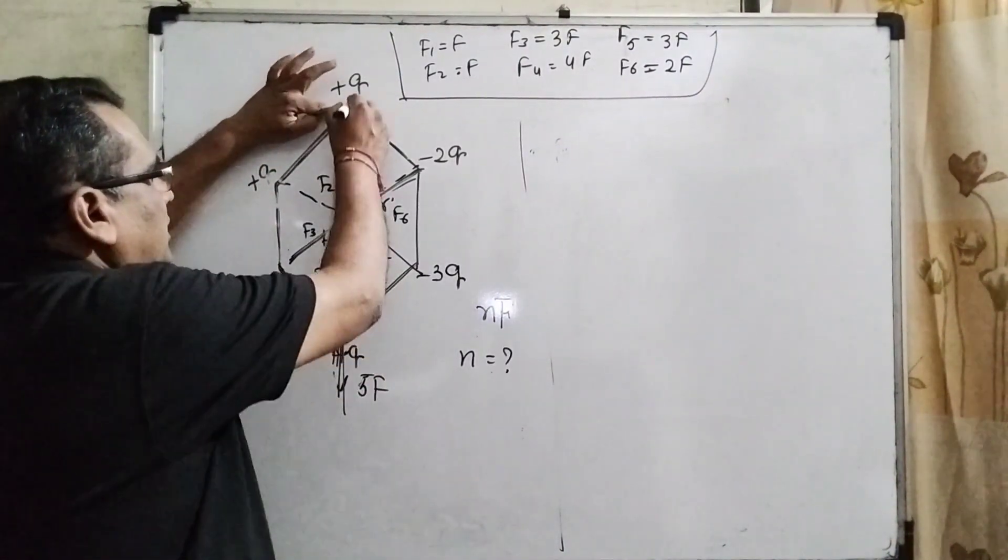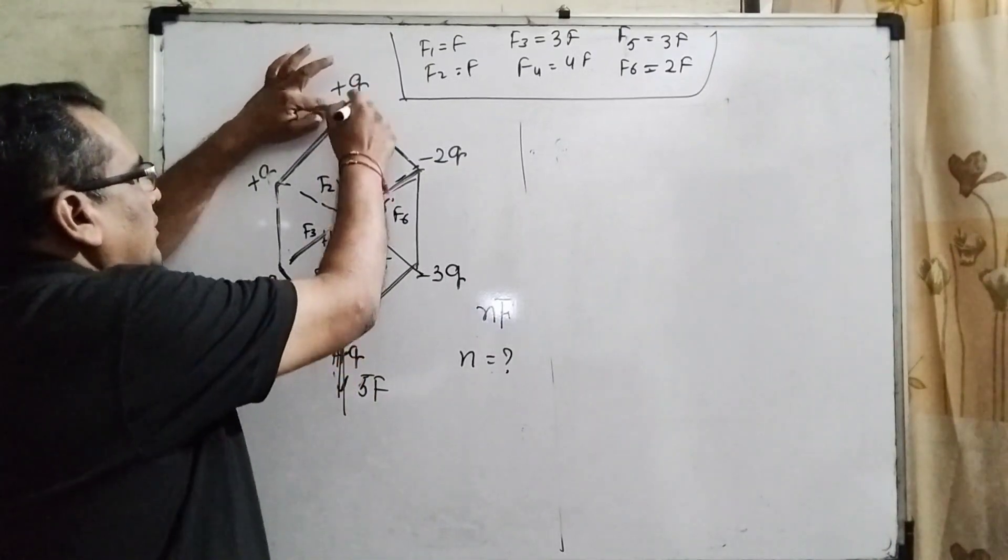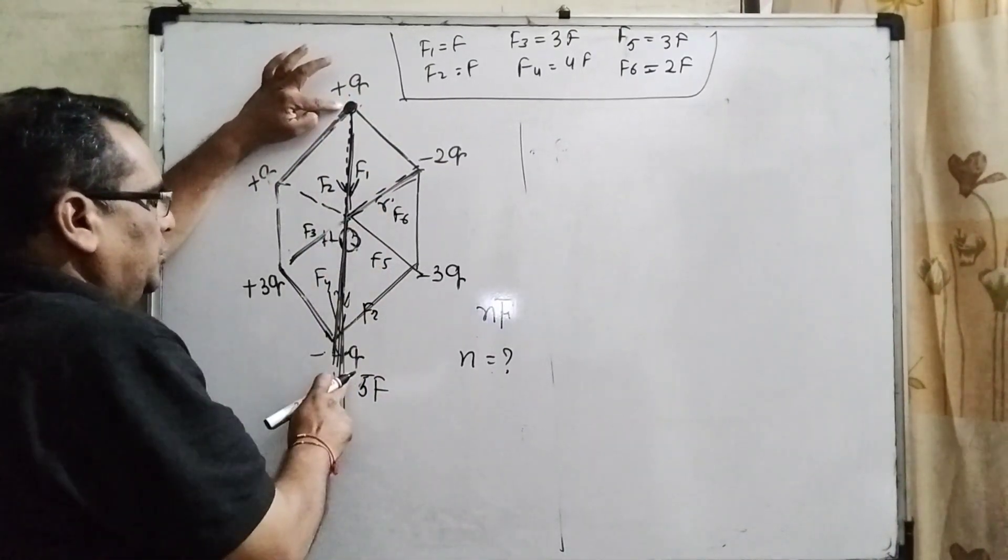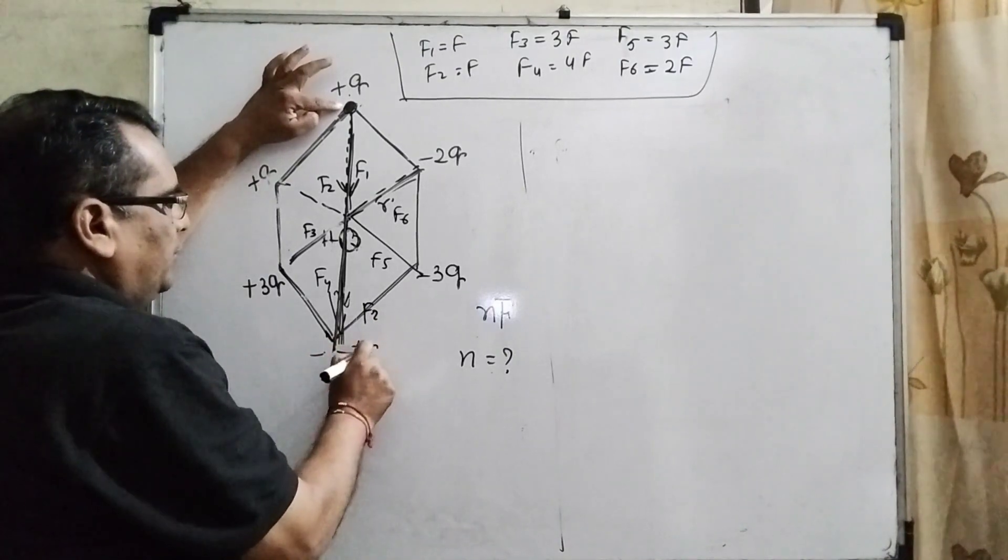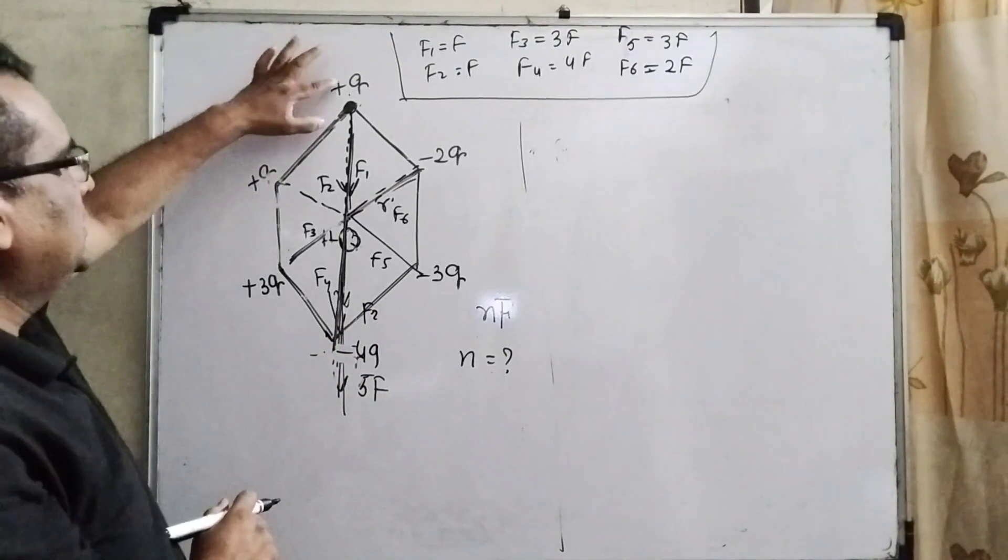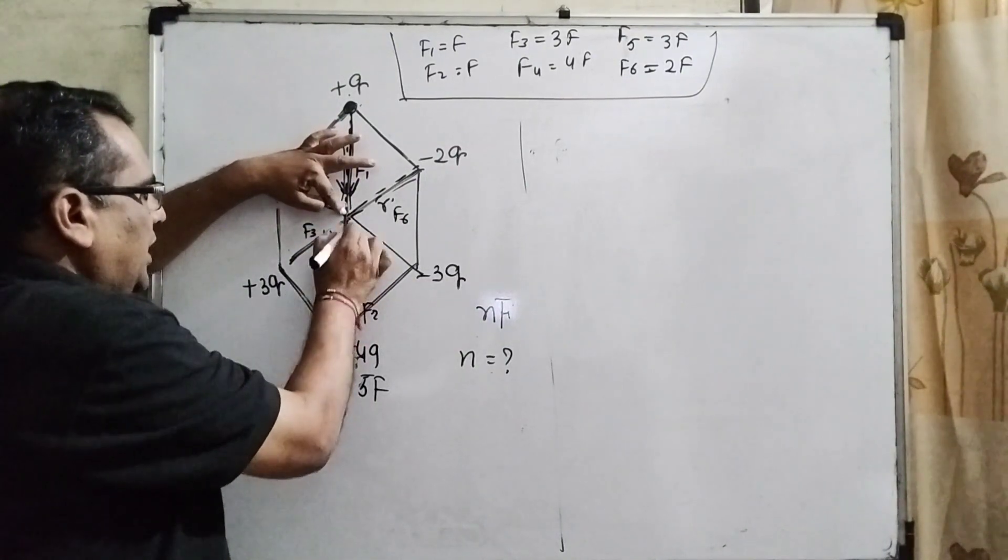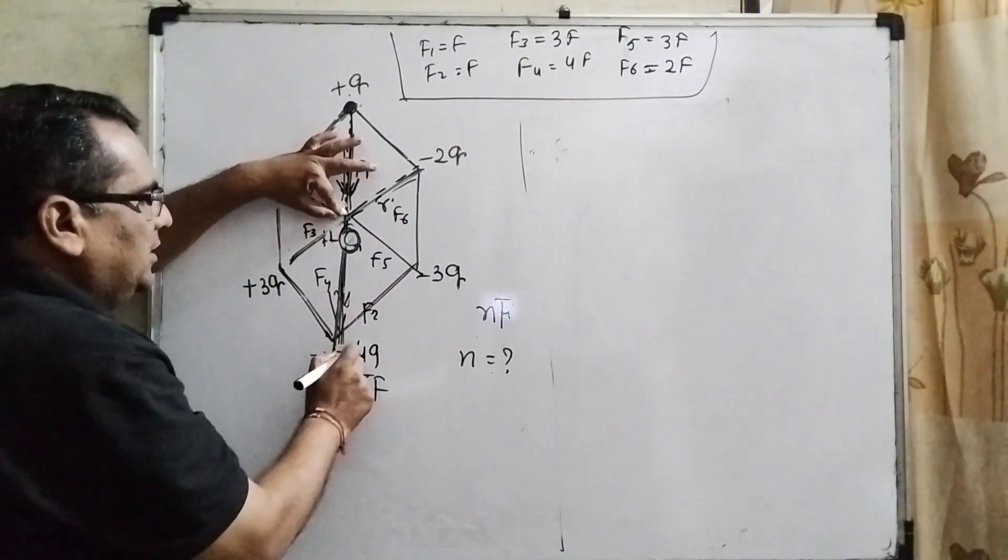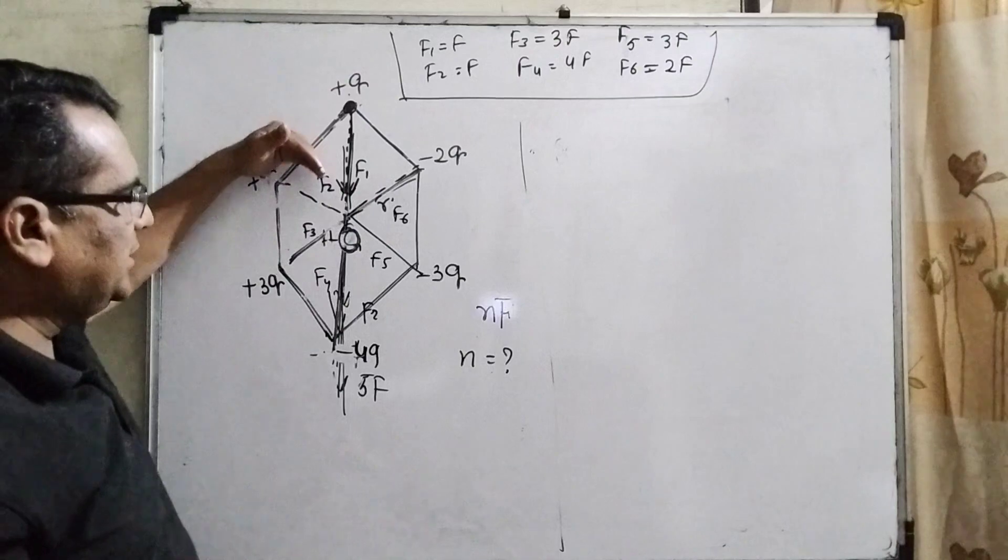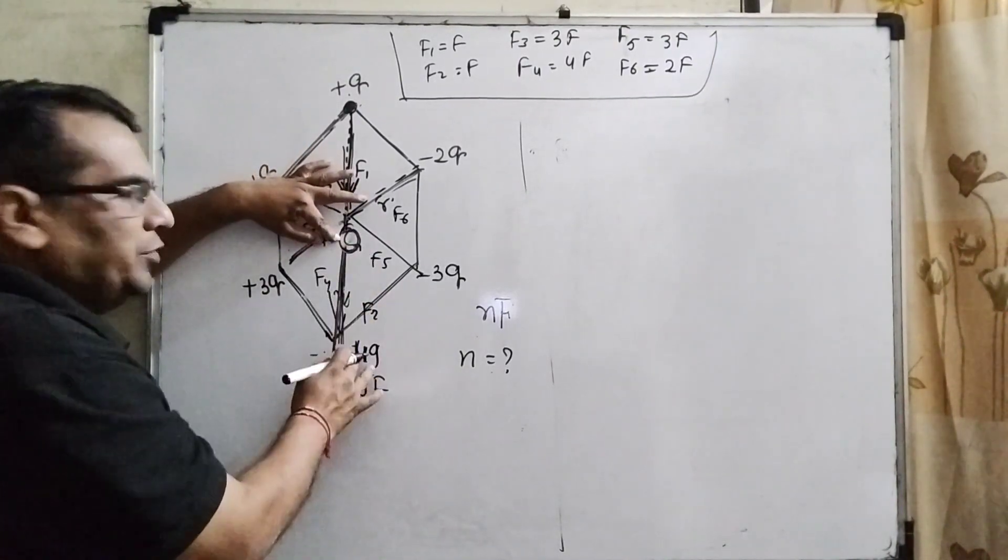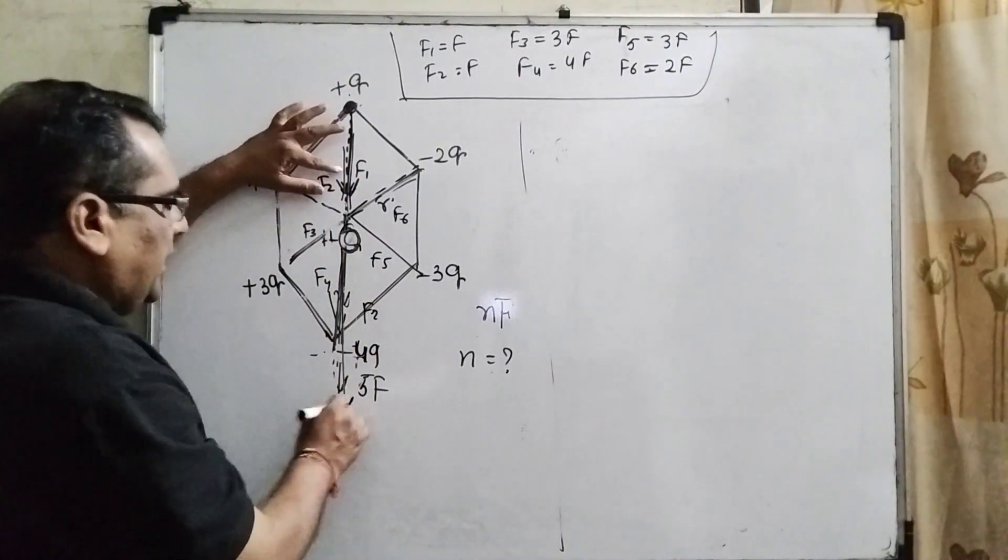Now let us first we have to see this action line from plus q to minus 4q. You can see that this is acting to the center and this is positive plus q charge and here is minus q charge. Always force towards to the positive to negative. So, therefore, it is the same direction.